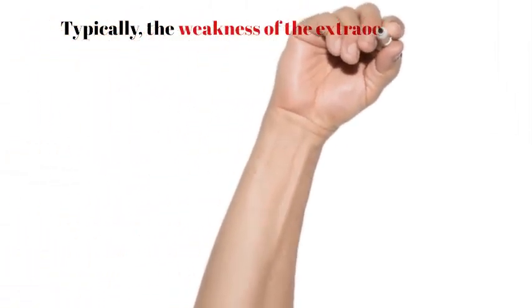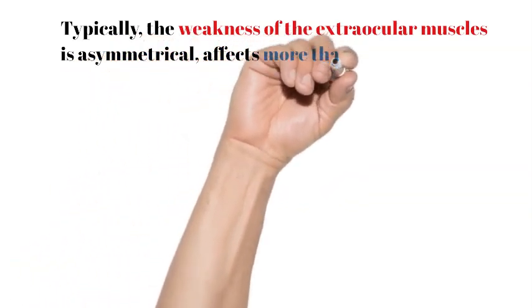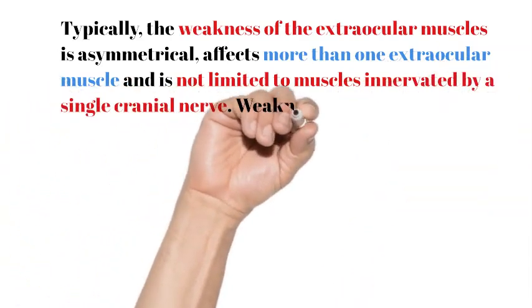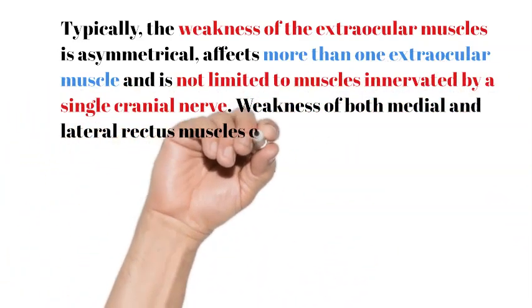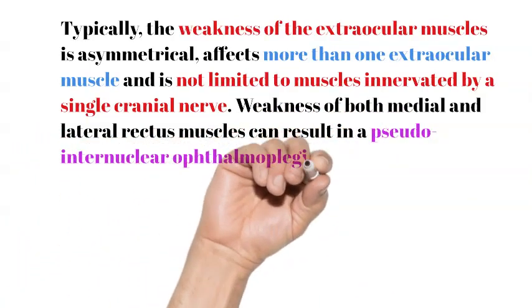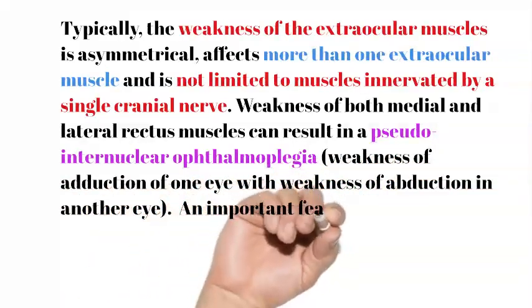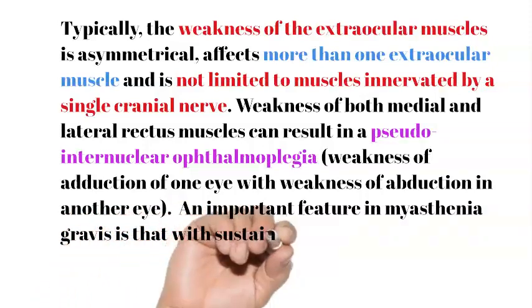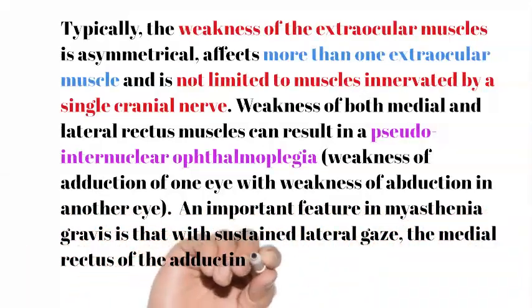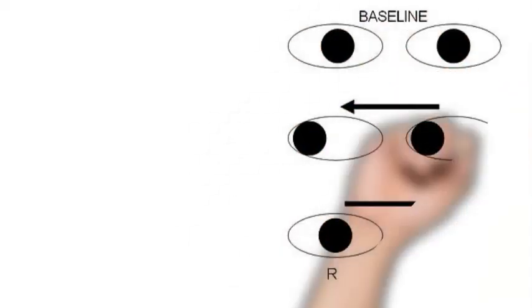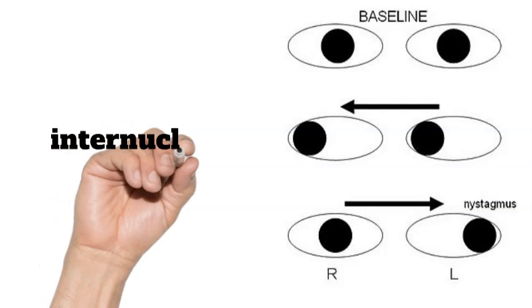Typically, the weakness of the extraocular muscles is asymmetrical, affects more than one extraocular muscle, and is not limited to muscles innervated by a single cranial nerve. Weakness of both medial and lateral rectus muscles can result in a pseudo-internuclear ophthalmoplegia — weakness of adduction of one eye with weakness of abduction in another eye. An important feature in myasthenia gravis is that with sustained lateral gaze, the medial rectus of the adducting eye fatigues, and thus the nystagmus becomes coarser in the abducting eye.